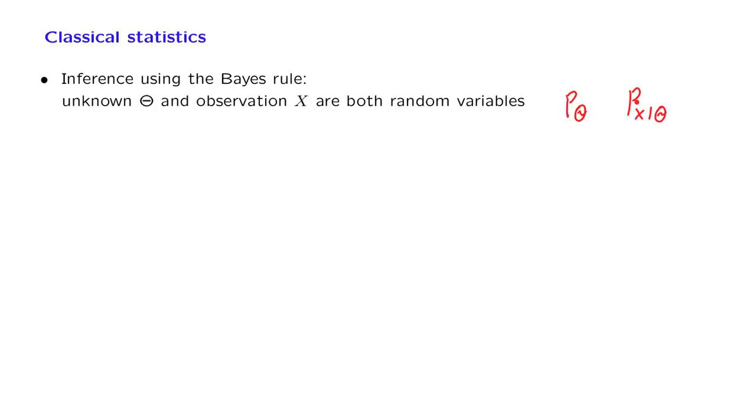And then we do some calculations, and we use the Bayes rule, and we find the posterior distribution of theta given the observations. And this tells us all that there is to know about the unknown quantity theta, given the observations that we have made.